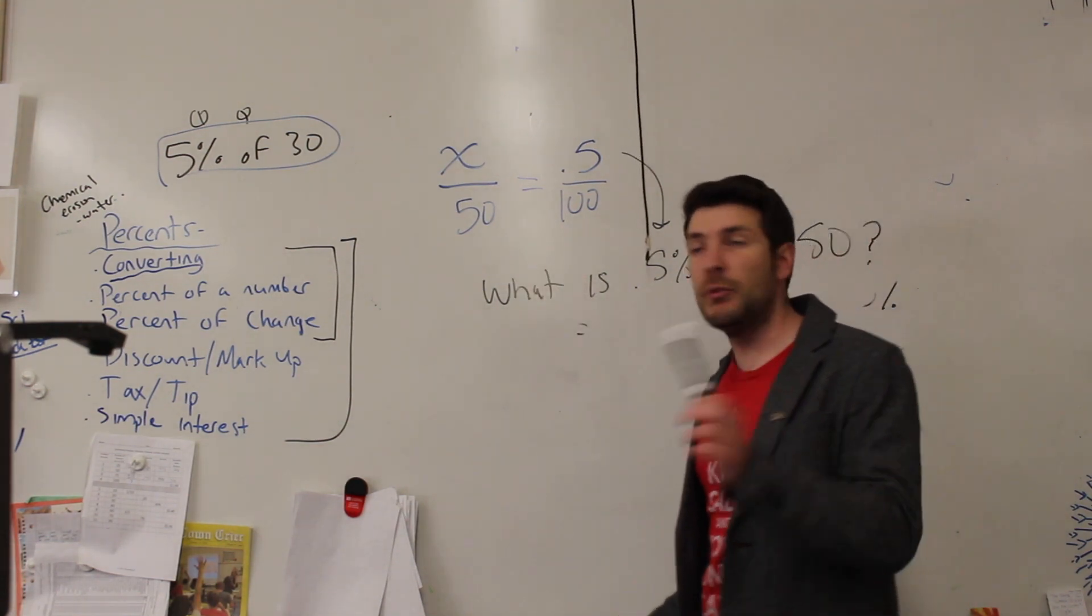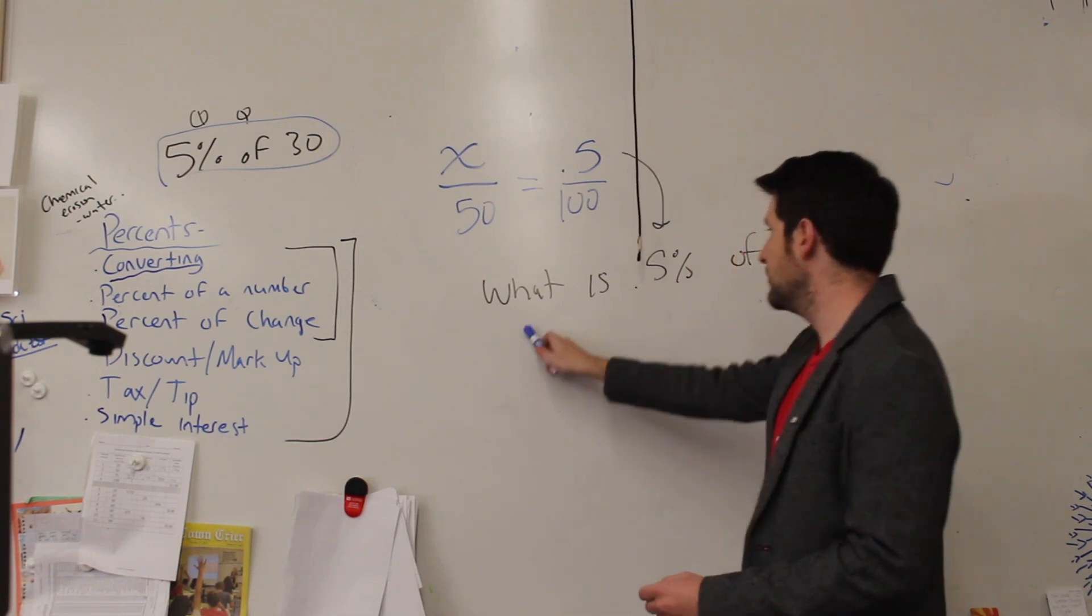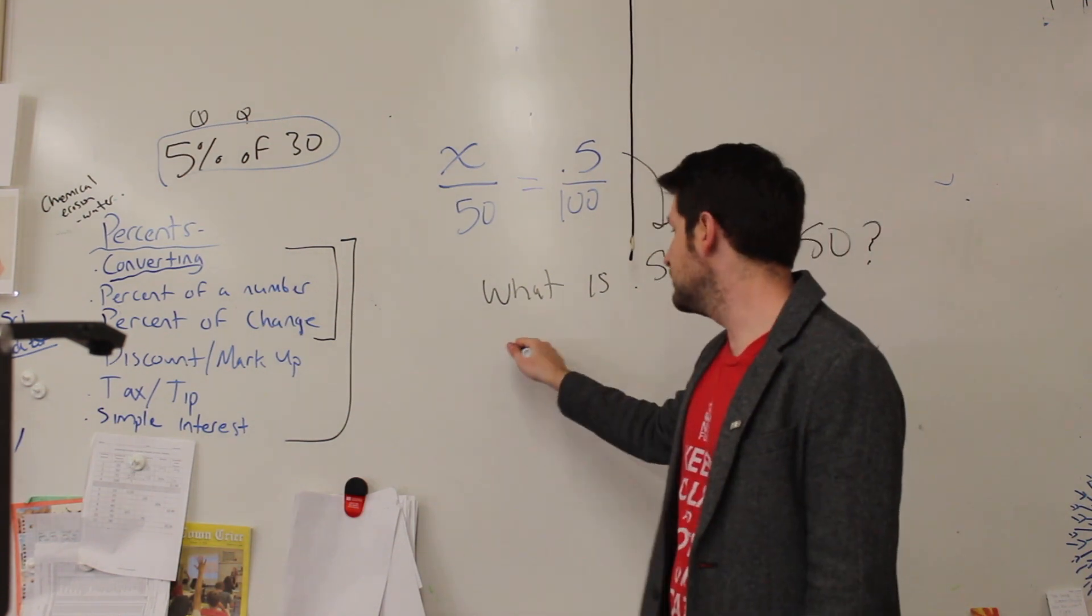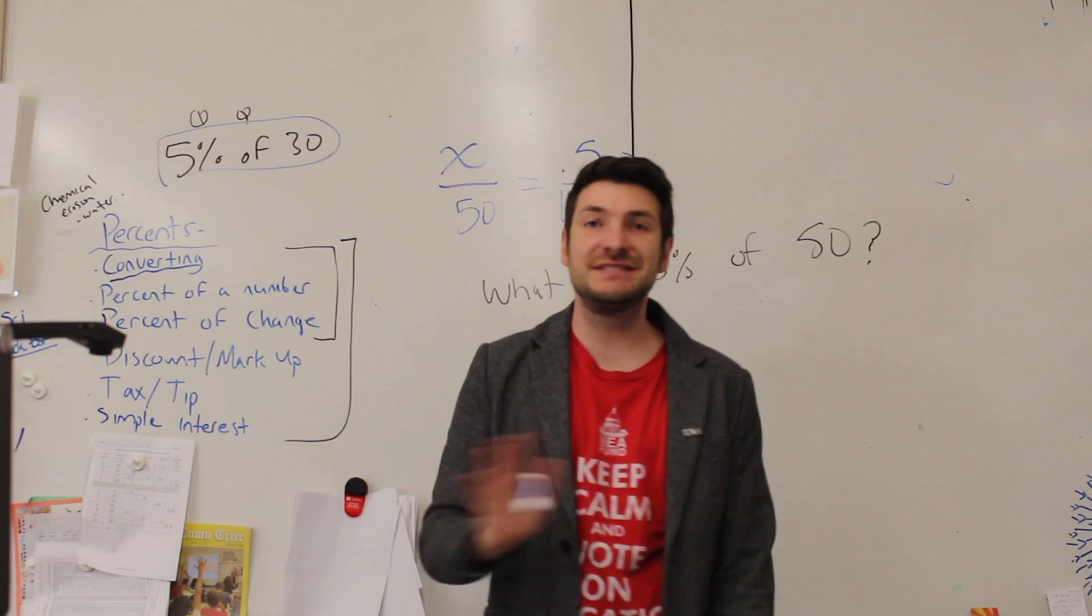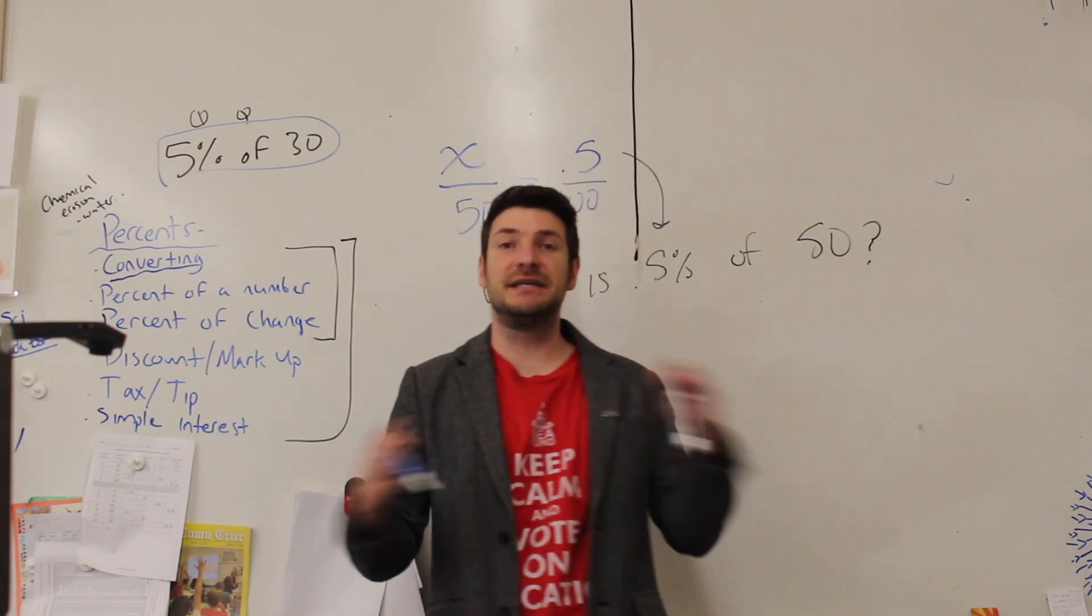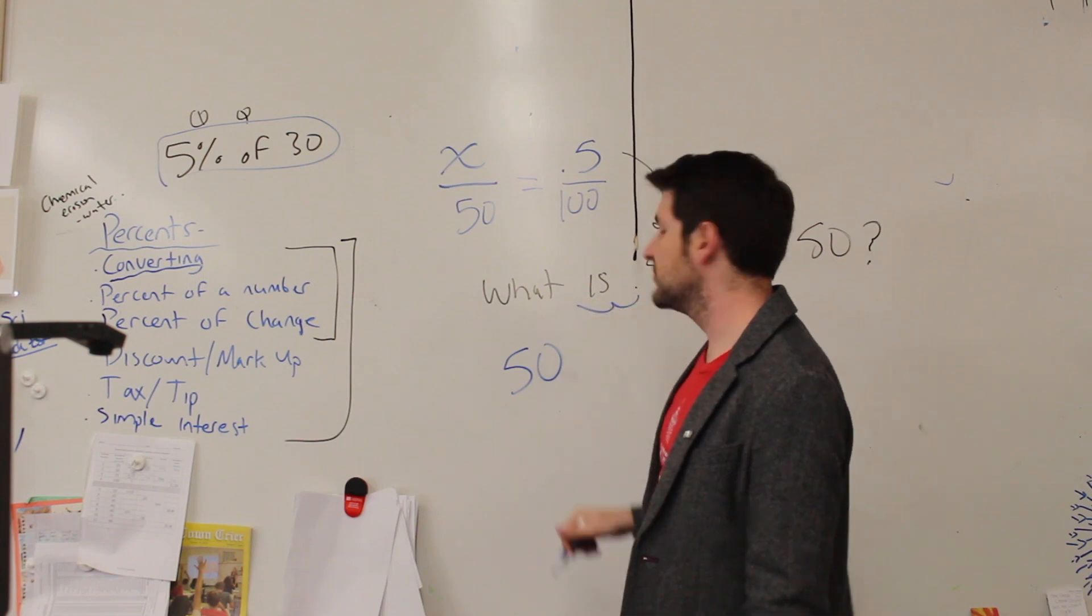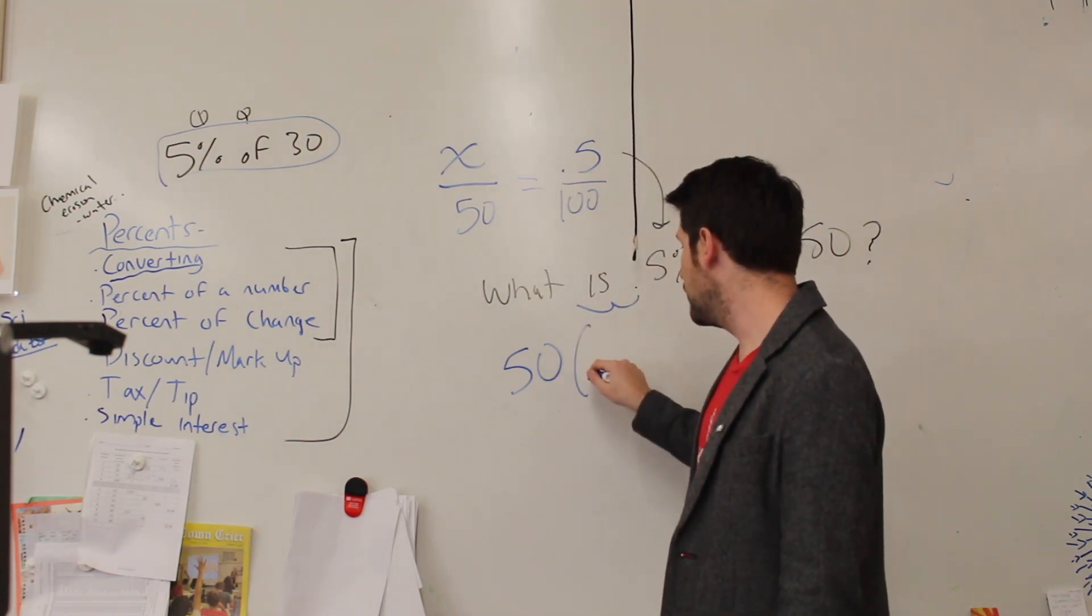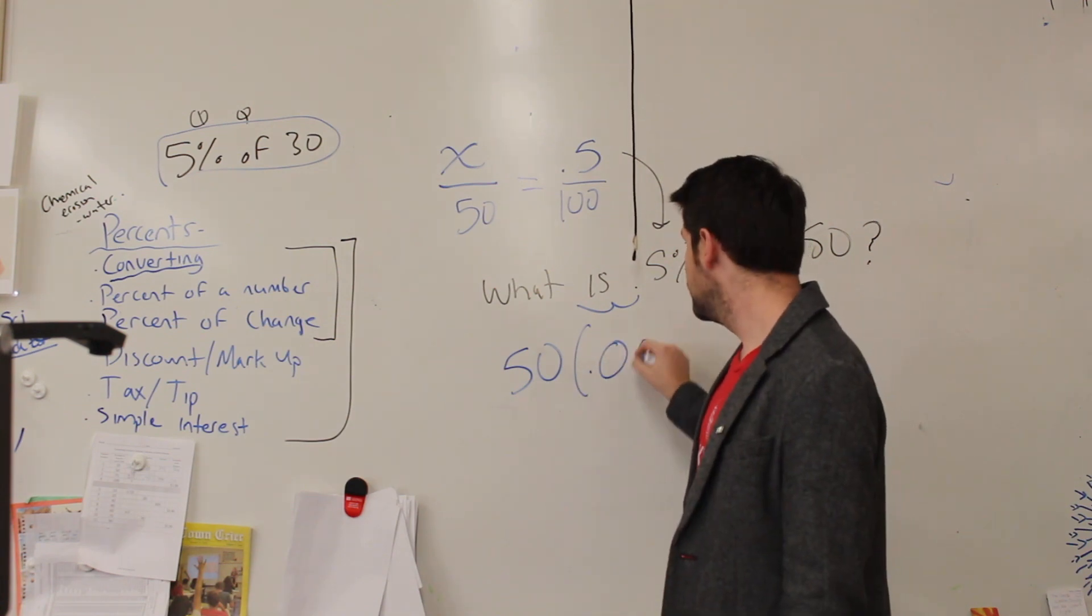This is one way we can set it up. The other way we could set this guy up, now that we've written this out, what is 0.5% of 50? We just have to multiply 50 times 0.5%. But 0.5% is not a decimal. We have to make it a decimal first. So to make it a decimal, move our decimal over twice, and we end up with 50 times 0.05.